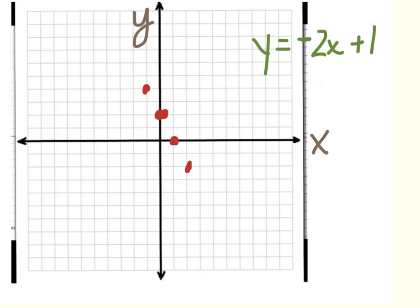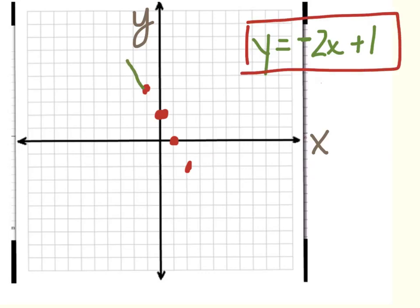The next thing you need to know when making a graph — if you're graphing an equation like this and it's linear, you should connect it. You should also extend it and put arrows on the end because it keeps going. We didn't do every point, we just did some. So that's one thing you need to do.